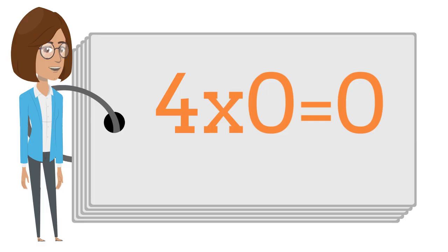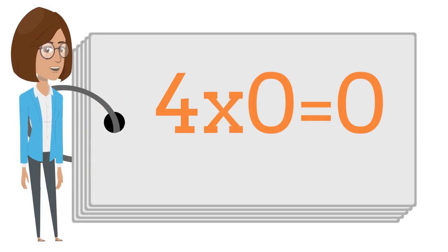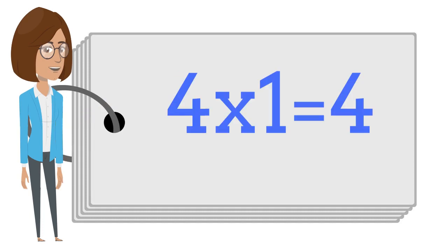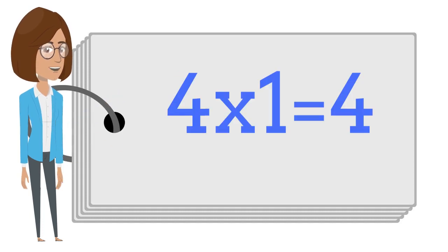4 times 0 is 0. 4 times 0 is 0. 4 times 1 is 4. 4 times 1 is 4.